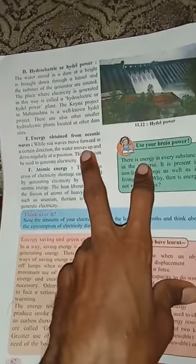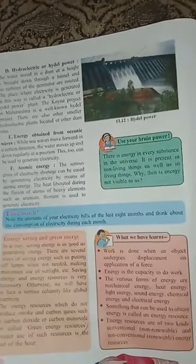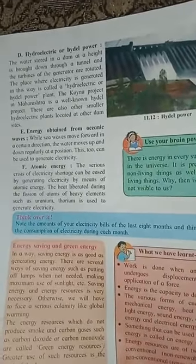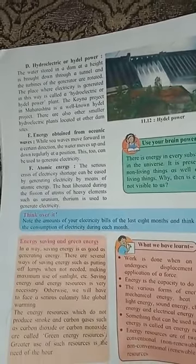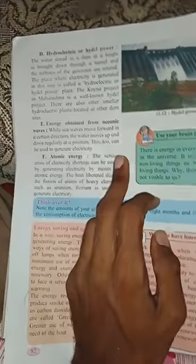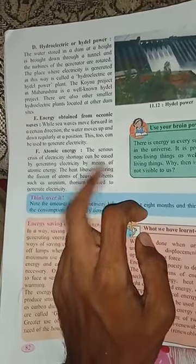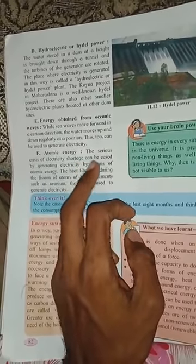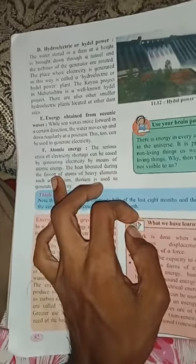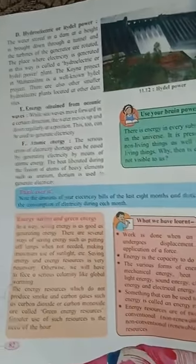Energy can also be obtained from oceanic waves. When sea waves are formed forward in a certain direction, the water moves up and down regularly at a position — this too can generate electricity. Same way, atomic energy — electricity shortage can be ceased by generating electricity by means of atomic energy. The heat liberated during the fusion of heavy elements such as uranium and thorium can be used to generate electricity.